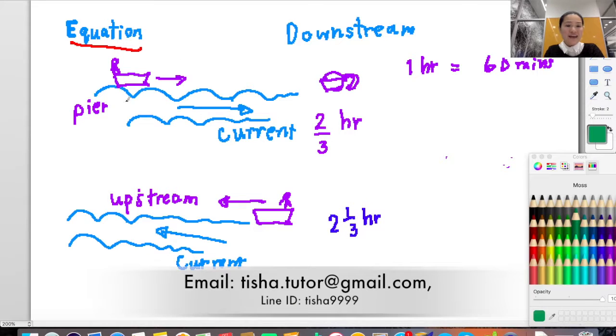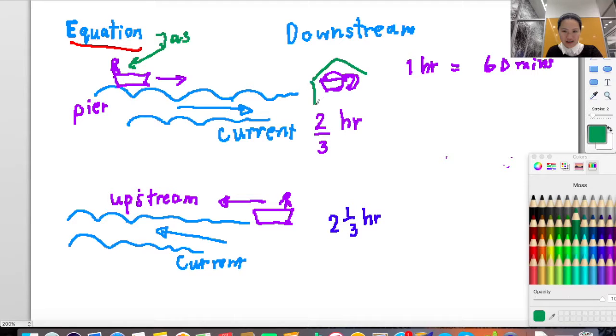This is Jasmine. She goes paddling. Here is the pier, here is the coffee shop. She goes downstream here.